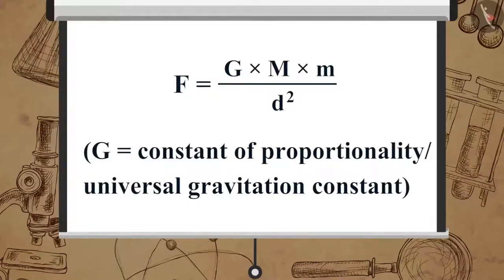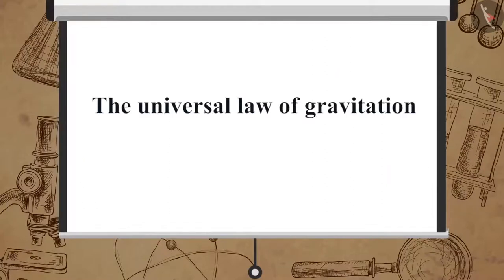Or, F is equal to G multiplied by M multiplied by m upon d square, where G is the constant of proportionality or universal gravitation constant. So, here we can sum up the universal law of gravitation as F is equal to G multiplied by M multiplied by m upon d square.